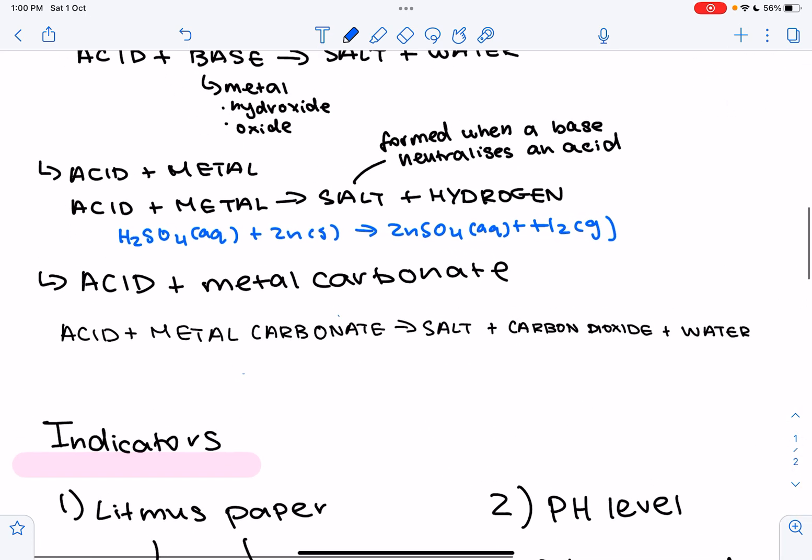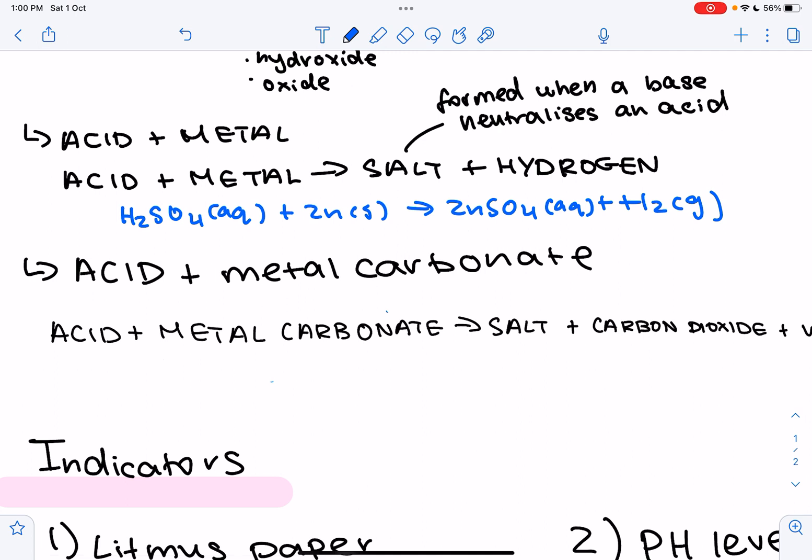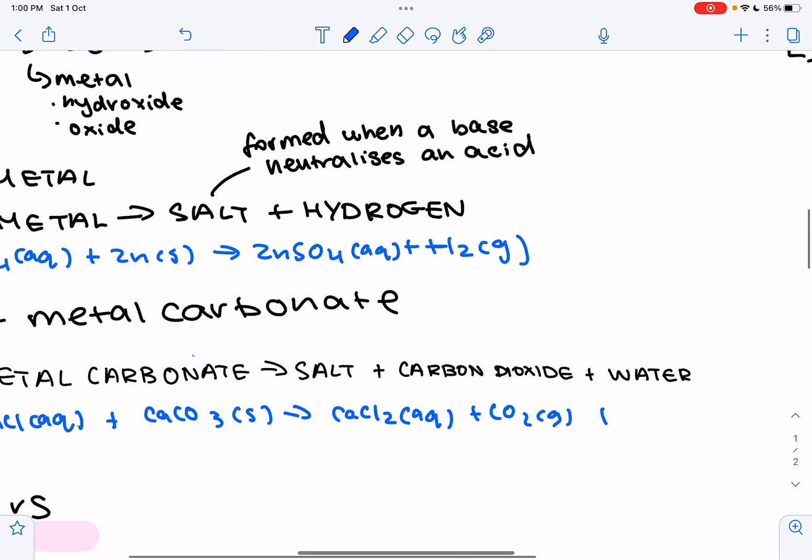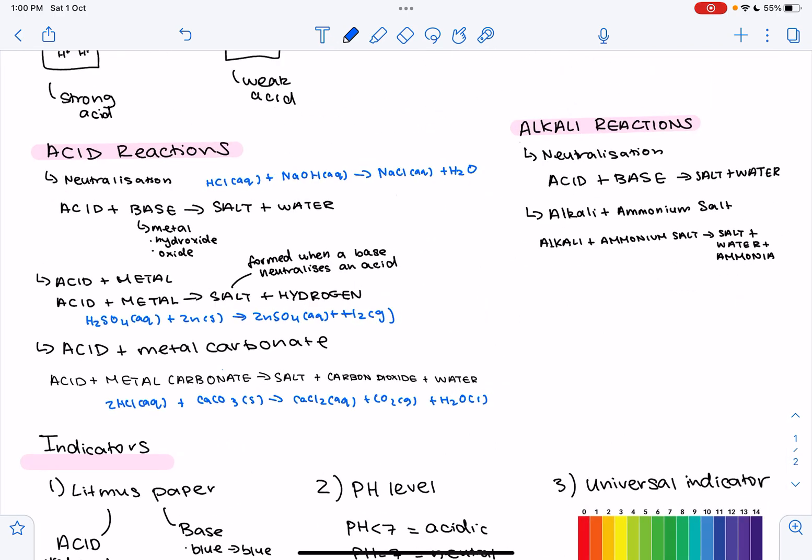And thirdly, for the acid reactions, we're going to look at an acid plus metal carbonate. So acid plus metal carbonate gives you salt plus carbon dioxide plus water. The observations here would be that the solid dissolves again, and there's fizzing. So an example of this would be hydrochloric acid plus calcium carbonate, which is also known as limestone, gives you calcium chloride plus carbon dioxide gas plus water. And then just quickly make sure this is balanced. And those are the three different reactions we're going to look at for acids.